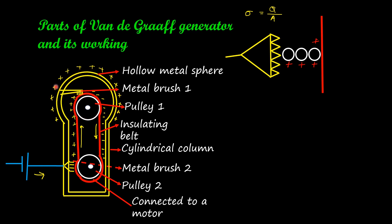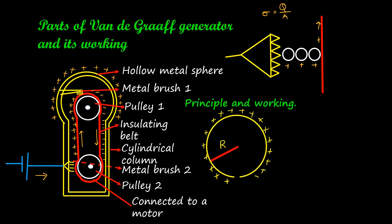You might wonder why it is charged in this fashion — first the belt is charged, then charge from the belt is transferred to the sphere. To understand that, consider a charged metallic sphere of radius R with total charge Q. Because of the charge on the surface, a potential is generated: V = kQ/R. Each material of the conducting sphere has a certain limit up to which only it can be charged. Say this sphere can develop a potential of only 10 volts — it can be charged only up to that level.